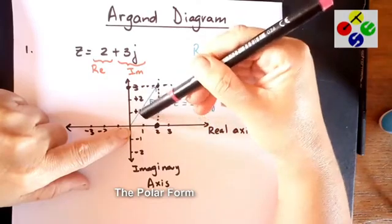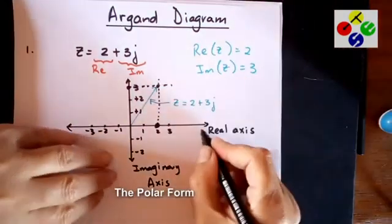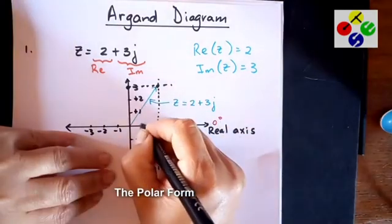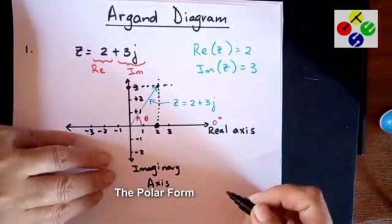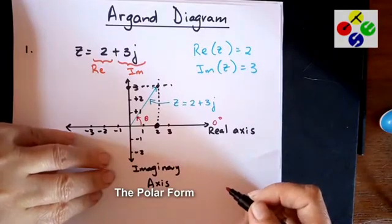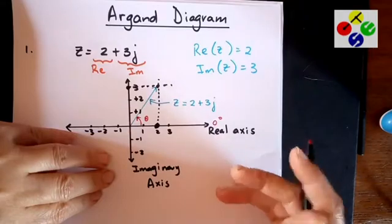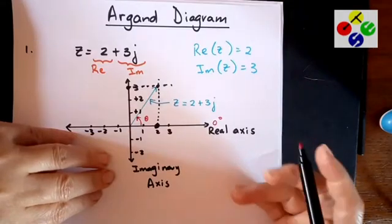And there's also an angle. If we use the real axis as your zero degrees, you'll see that that is your angle there. So it gives a direction. So anything that has length and direction would be a vector.